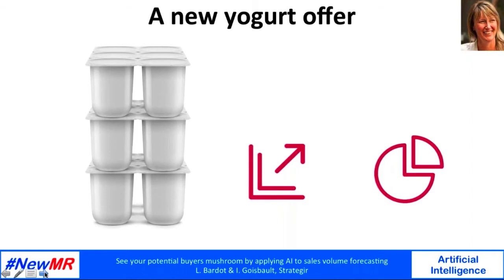We wanted to share that by presenting an example on the yogurt category — so fast moving consumer goods. This yogurt company was considering launching a bigger format of yogurts, and before launching this innovation, the company was willing to get a solid sales volume forecast.